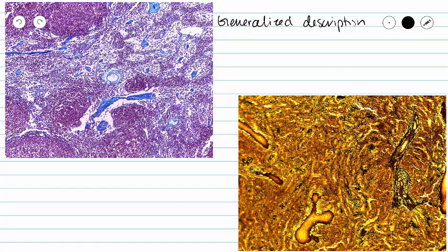Here we have two different slides of reticular tissue and they look vastly different. One of them is of a lymph node and the other is called a gold stain, and here we're looking at the spleen. I am sure that you can tell why it's called a gold stain given its general color.